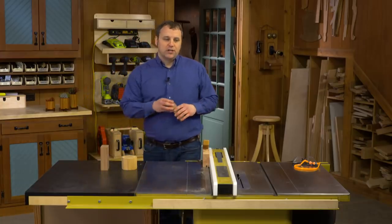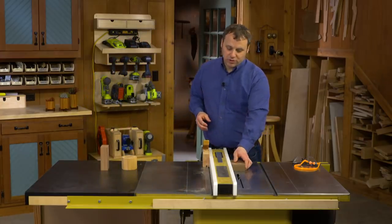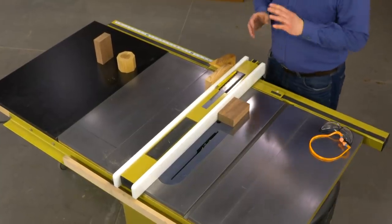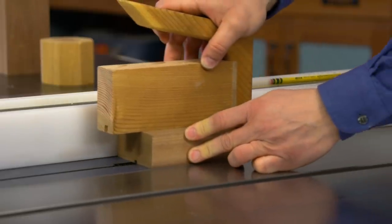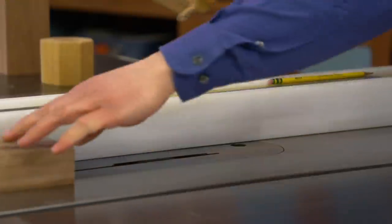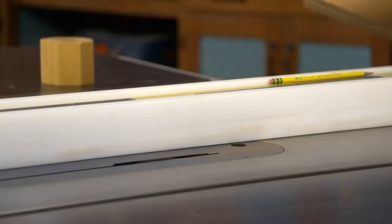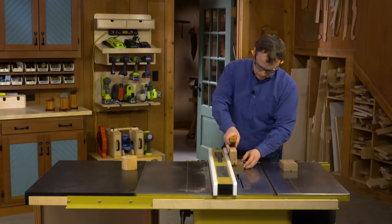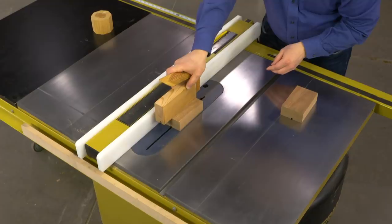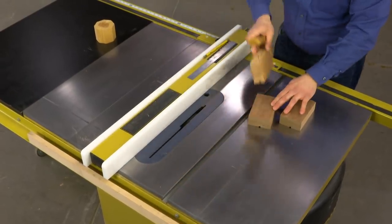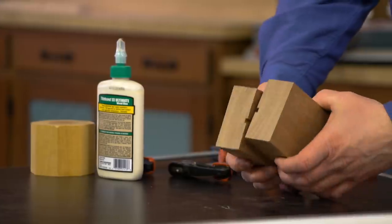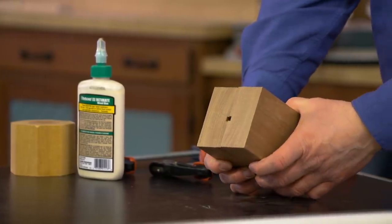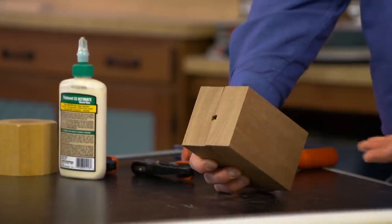I can do that right here using a dado blade. What I'll do is make a shallow cut in each of the halves and then I can glue them together. With the grooves in our two pieces cut, once I put them together you'll be able to see how that creates the hole for the excess water.